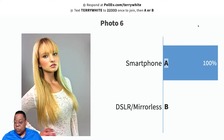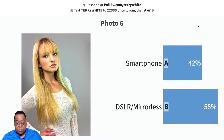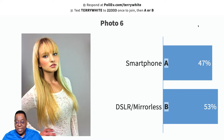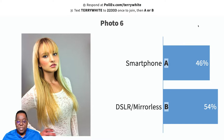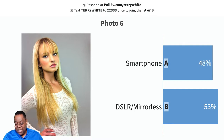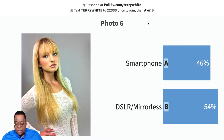Photo number six — a studio shot. Gina notes that her phone takes great photos in natural light, which is true: back in the day, light mattered much more with smartphones; bad light meant horrible image quality from the sensor. You're a little more evenly divided on this one. Locking in at 46% smartphone versus 54% DSLR.